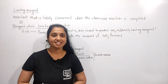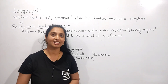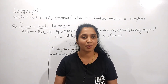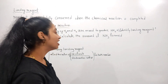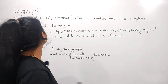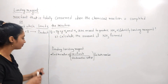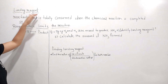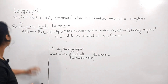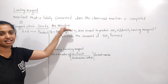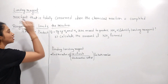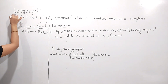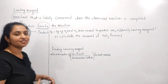Hello everyone. In our previous class we discussed stoichiometry and its calculations. In today's class I wish to explain limiting reagents, which is very important in competitive examinations like NEET. More and more questions are asked on this topic. First, we have to know the meaning of limiting reagent. 'Limit' means stops — the reagent which limits or stops the reaction is called a limiting reagent.